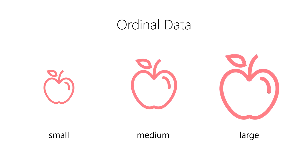For example, we can group apples into small, medium, and large sizes. Medium apples are larger than small apples, and large apples are larger than medium apples. So they do have a natural rank order.